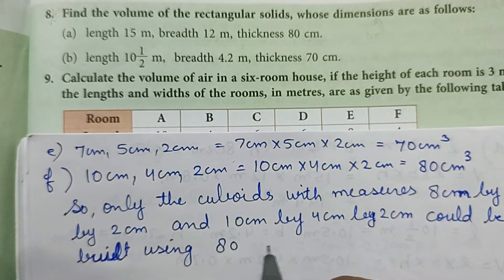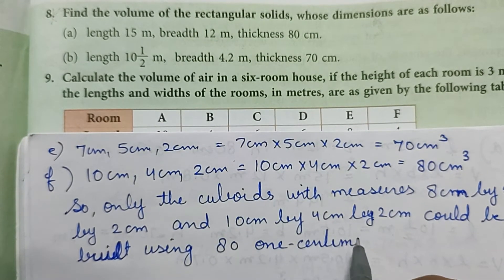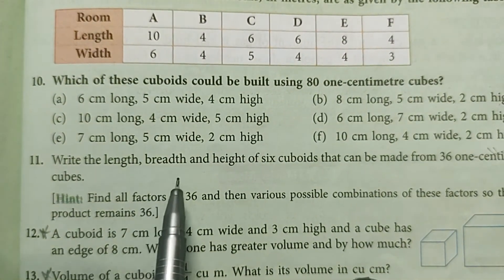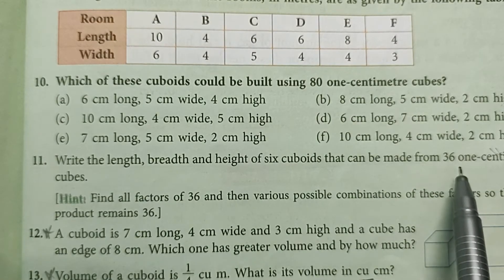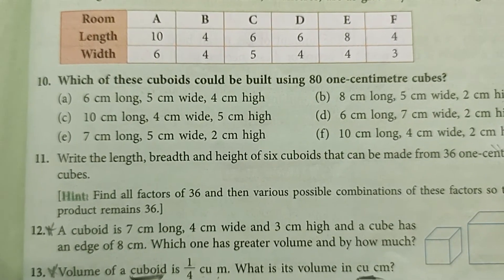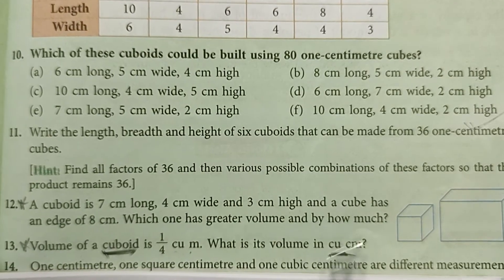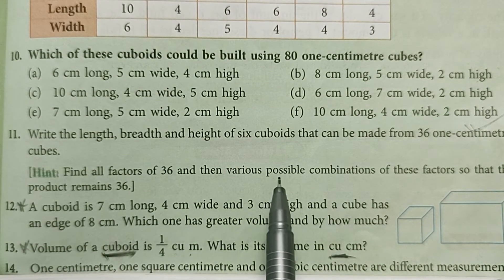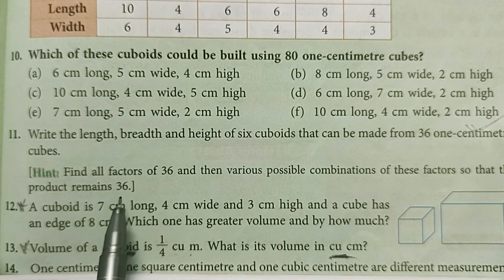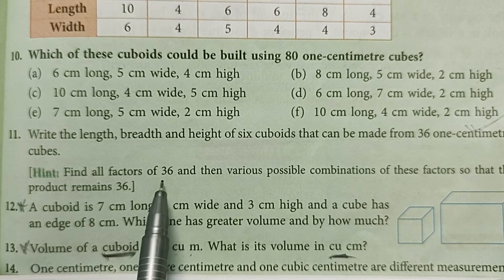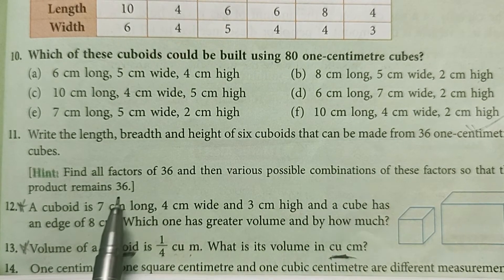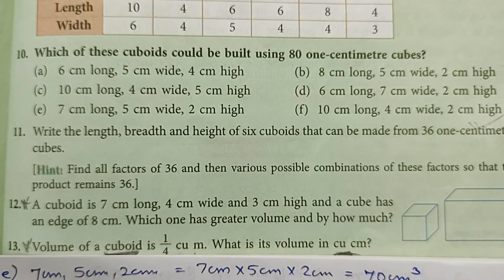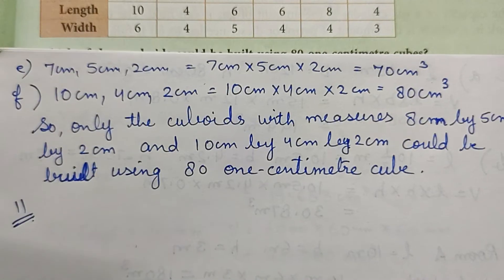Question number 11: write the length, breadth, and height of six cuboids that can be made from 36 one-centimeter cubes. We need to write the measurements of cuboids that can be made from 36 one-centimeter cubes. The hint given is: find all factors of 36 and then find various possible combinations of these factors so that the product remains 36. So first we find all factors of 36.